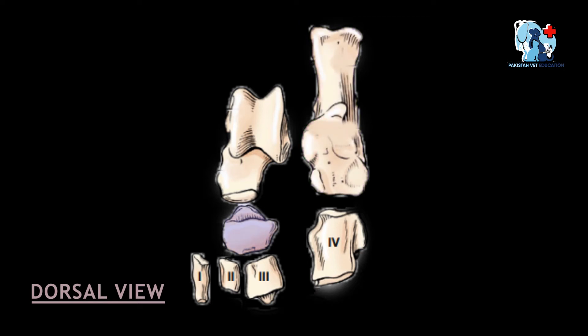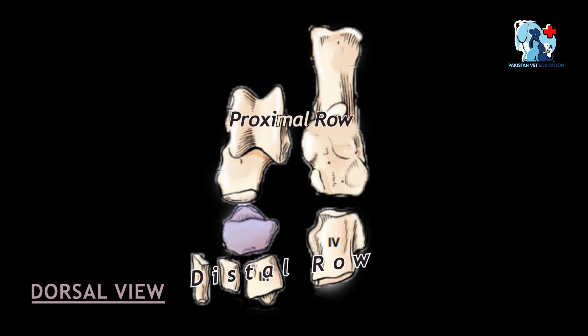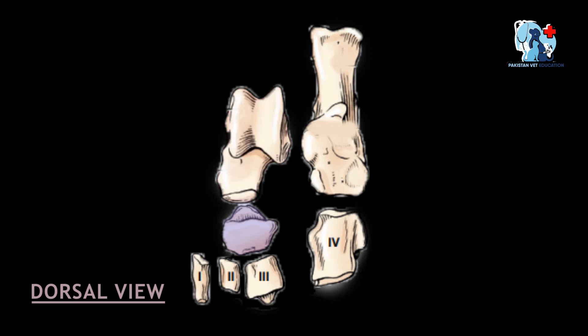After the proximal row, the central row contains a single bone: the central tarsal bone. It is present between the proximal and distal rows. Proximally it articulates with the head of the talus bone, while distally the central tarsal bone articulates with the first, second, and third tarsal bones in the distal row.